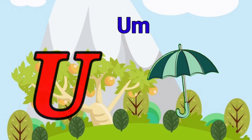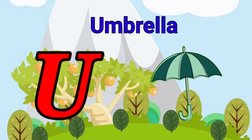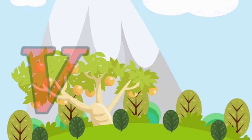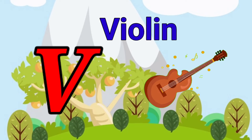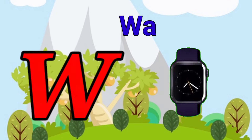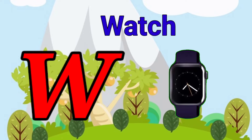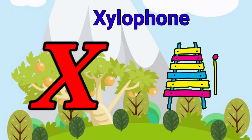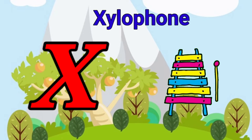U is for umbrella, u-u-u-umbrella. V is for violin, v-v-violin. W is for watch, w-w-watch. X is for xylophone, z-z-xylophone.